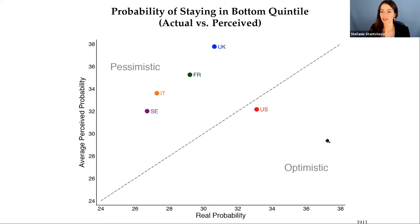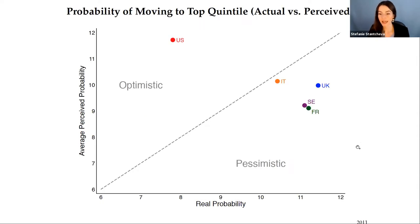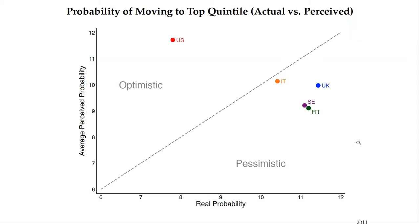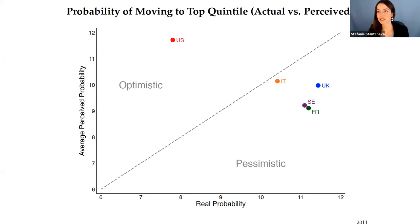We can also look at the 'American dream' metric — making it from rags to riches, measured as children making it from the bottom to the top quintile. The American dream is actually least alive in the US: around 7.8 out of 100 children will make it from bottom to top. European countries are quite accurate on this, perhaps underestimating mobility slightly. However, the US really overestimates that mobility — the idea of the American dream is very salient in the US even though it's not necessarily true in reality.